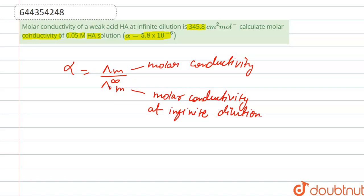So we have to calculate the value of lambda M. The value of alpha is given, that is 5.8 × 10⁻⁶, and the value of molar conductivity at infinite dilution is given, that is 345.8 cm square per mole.